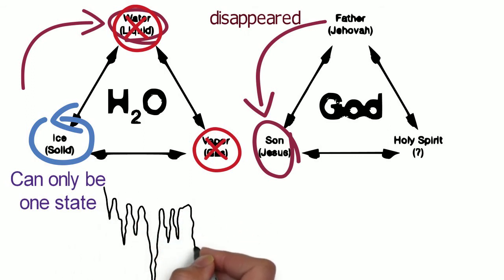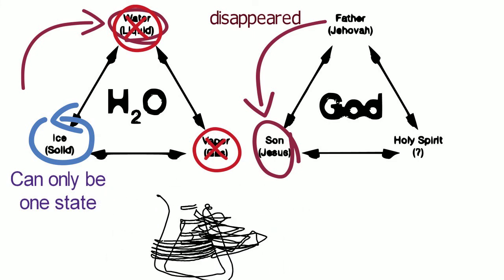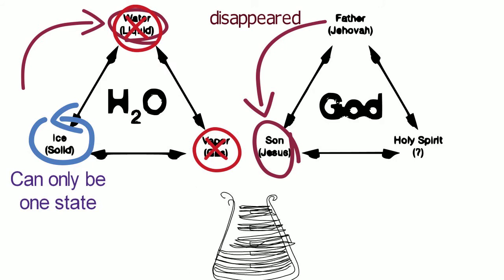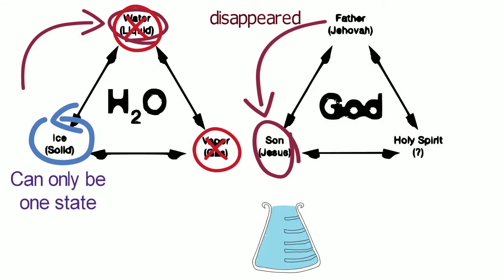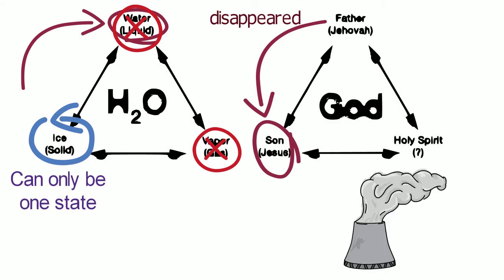When water becomes liquid, the ice turns into liquid, then there is no existence of the ice at all. It simply ceases to exist. And when the liquid turns into vapour, then the liquid ceases to exist.